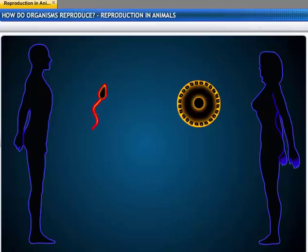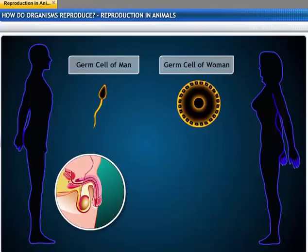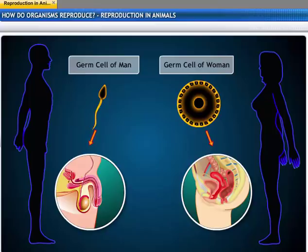One germ cell is large and stores food, while the other is smaller and motile. This motile germ cell is the male gamete, and the larger germ cell is the female gamete. This differentiation in germ cells leads the female and male reproductive organs to be different, causing dissimilarities in the bodies of male and female animals.